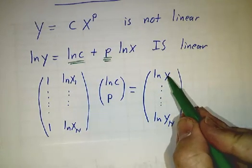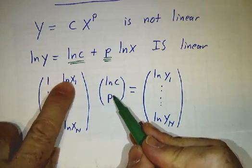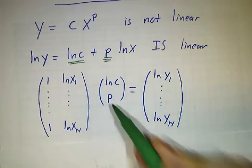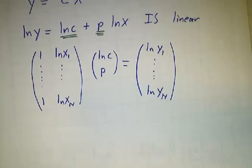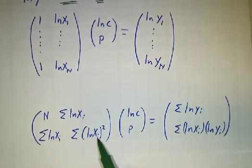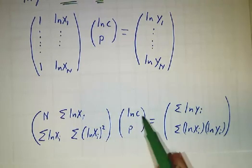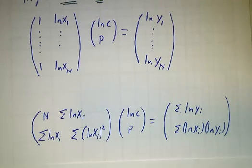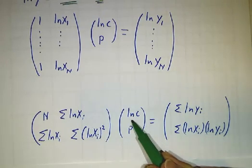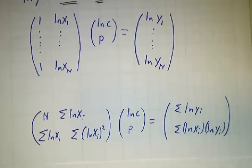Log y equals log c plus p times log x. Once again it's a 2x2 system. We write down A transpose A, find the inverse of that matrix, multiply it by the right-hand vector, and get our answer. Be careful: the answer you get is not c and p — it's log c and p. Then you exponentiate log c to get back c.